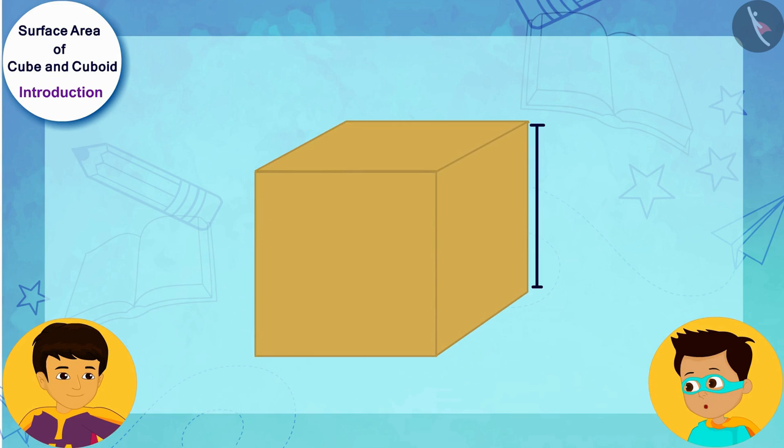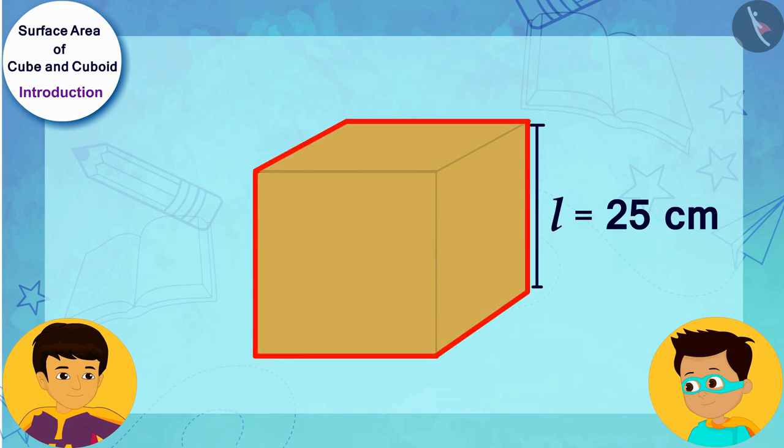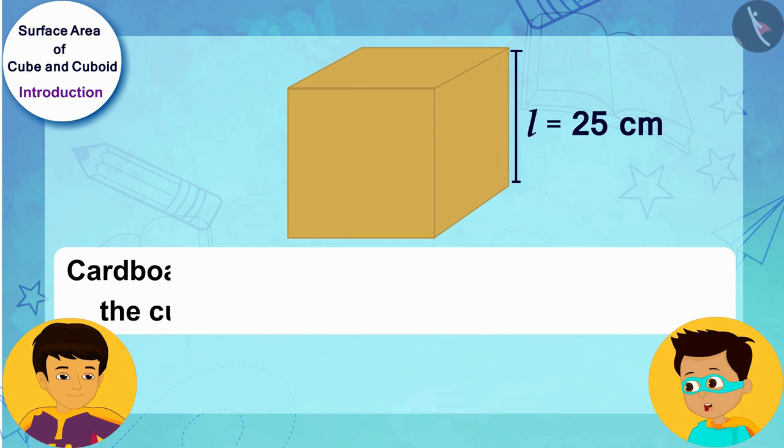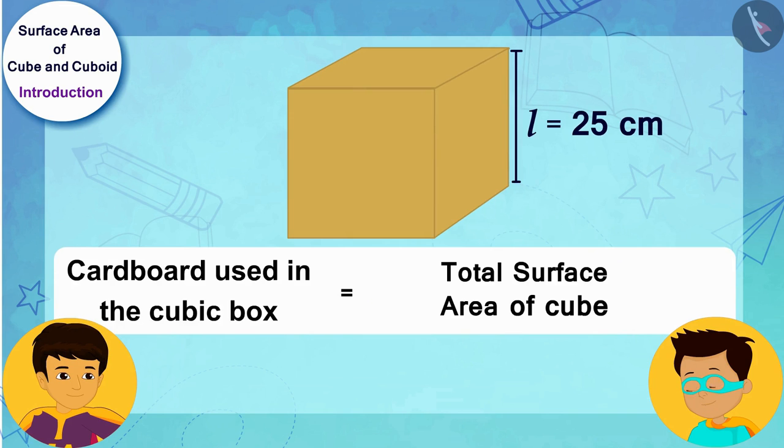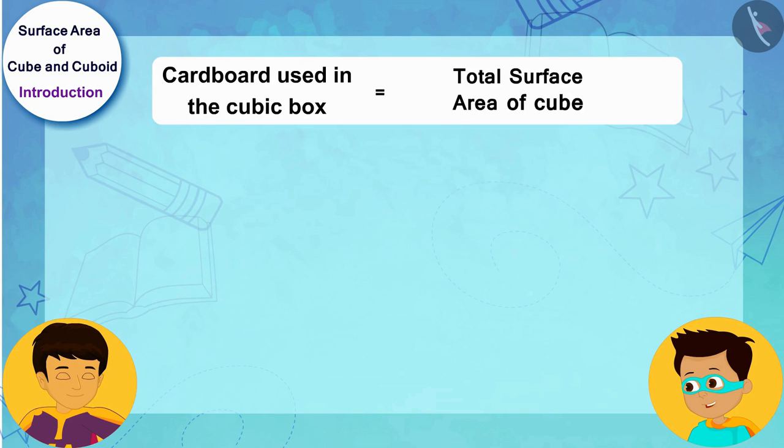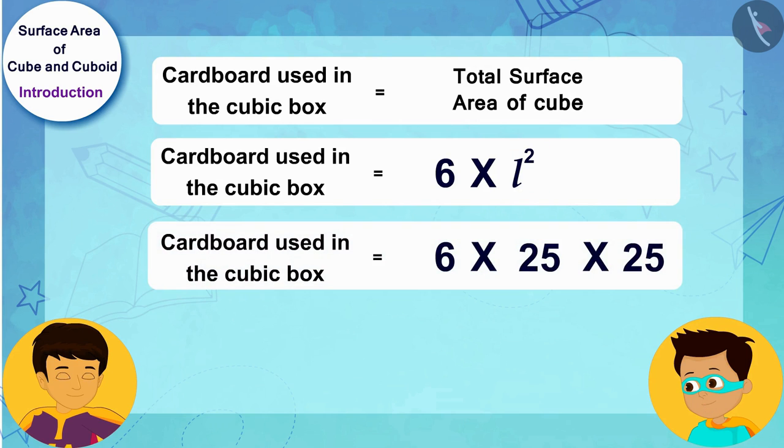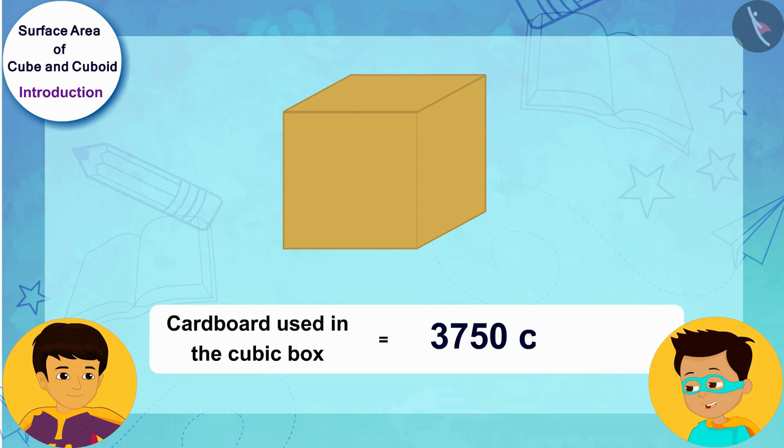And the length of the sides of my cubic box is 25 cm. Since we have to make a cubic box, to find the size of the cardboard used in it, we will have to find its total surface area. Let me quickly solve this by writing the length of the side of my cubic box, 25 cm, instead of L here. In order to make my cubic box, I need cardboard of 3750 square centimeters.